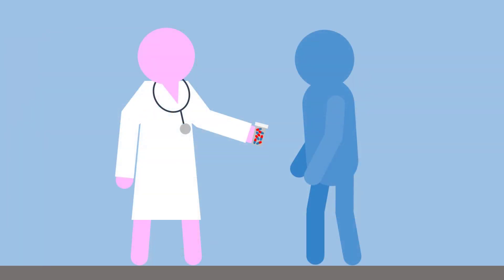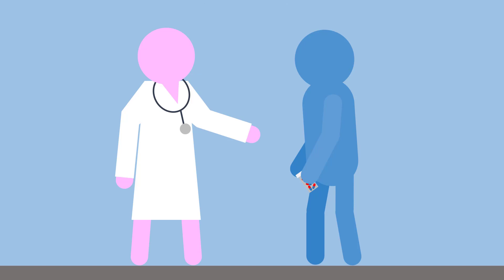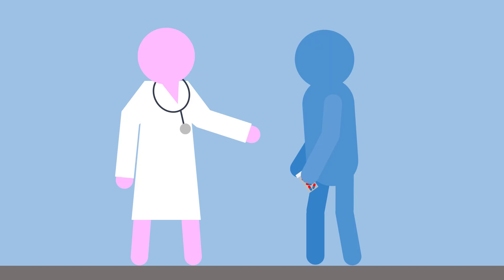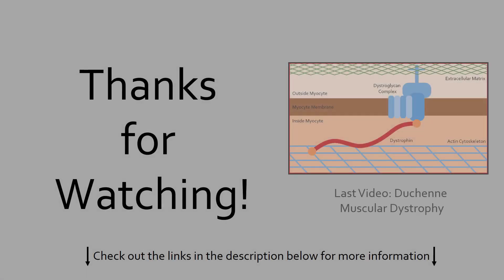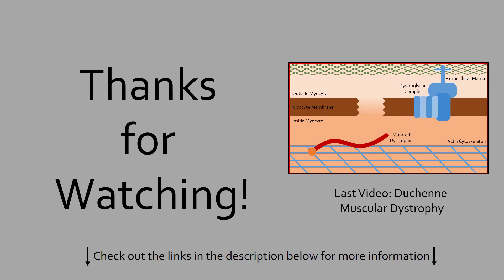For those diagnosed with Addison's disease, they need to take steroid supplements — usually orally — throughout their life to maintain healthy corticosteroid levels and avoid an Addisonian crisis. Most people with Addison's disease are able to live normal lives. However, since symptoms usually develop slowly and are shared with many other diseases, often it is the unexpected Addisonian crisis that causes death among those unaware they have this disease. Therefore, it is important to raise awareness to prevent these avoidable deaths. Consult a physician if you suspect that you or someone you know may have Addison's disease.